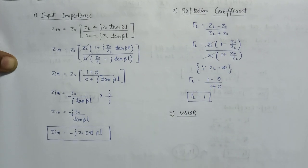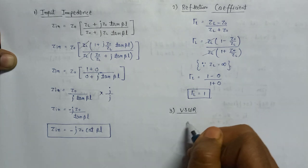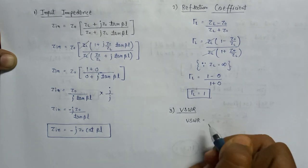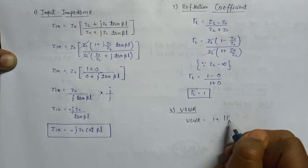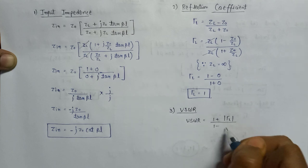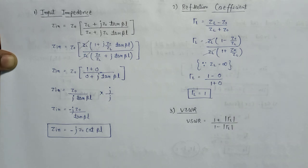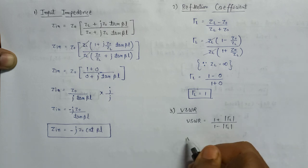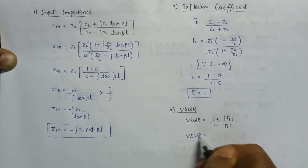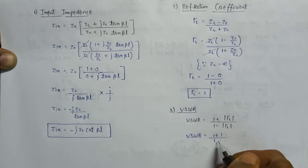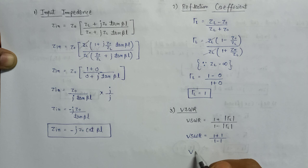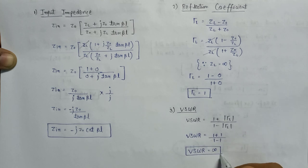The expression for VSWR is (1 + |Γ|) / (1 − |Γ|). We calculated the reflection coefficient equals 1, so on substituting, VSWR = (1 + 1) / (1 − 1), and VSWR becomes infinite. This is the value of VSWR when the line is open circuited.